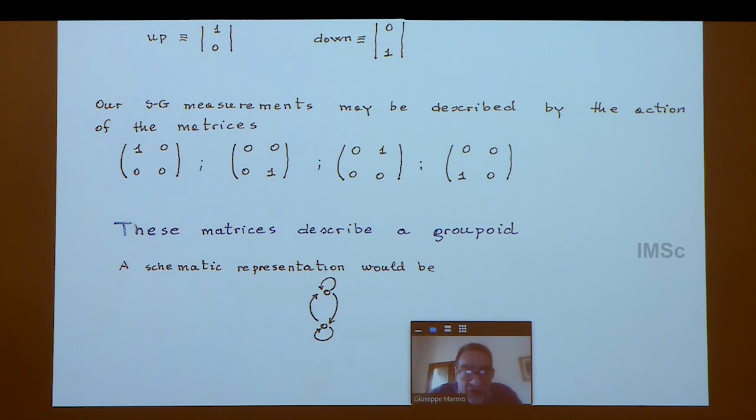If you look at the composition of these matrices, they close on what is called a groupoid. In this respect, a groupoid comes out directly as a representation of the Stern-Gerlach experiment for spin one-half. Next slide, please.